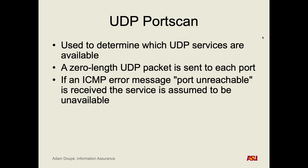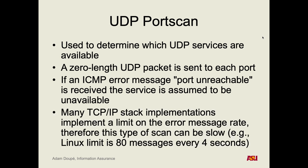One way to port scan: we send UDP packets to every port and look for replies. If we don't get any reply, it might be slow or we didn't send the right request. One technique is the inverse — we send packets and look for ICMP 'port unreachable' messages back, which tell us nobody is there. Where we don't get that message, we assume something is available. On Linux, you get 80 such messages every 4 seconds, so you can scan at most 80 ports every 4 seconds.